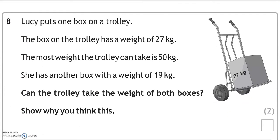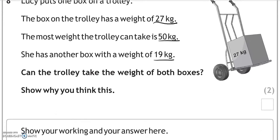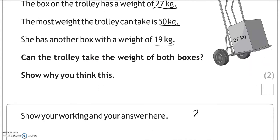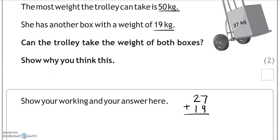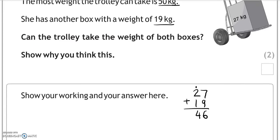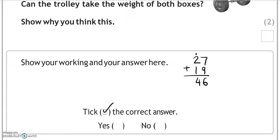Lucy puts one box on a trolley. The box on a trolley has a weight of 27 kilograms. The most weight the trolley can take is 50 kilograms. She has another box with a weight of 19 kilograms. Can the trolley take the weight of both boxes? Show why you think this. So we've got 27 and 19 kilograms. Is this more or less than 50? So 7 and 9 equals 16, 2 and 1 is 3, and another one is 4. So 46. Can the trolley take the weight of both boxes? Yes.